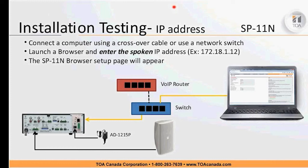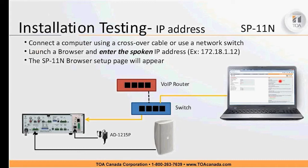To connect the computer to the SIP card, disconnect the connection from the VoIP router that was connected to the SP11n. The simplest way is a crossover cable straight from the computer into the SIP module. A tip: you can use an inexpensive dumb switch, which lets the VoIP router stay online at the same time so you can see system dynamics. Either use standard cabling through a switch, or a crossover cable directly — that way everything is interactive and online simultaneously. Then launch the browser using that IP address that was spoken.